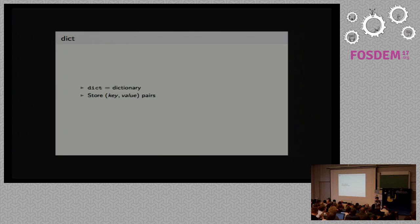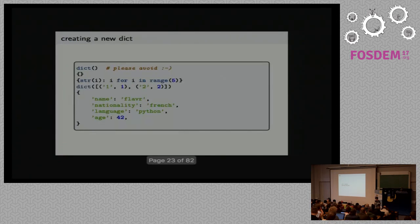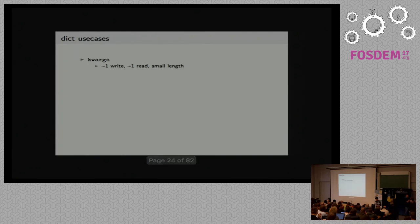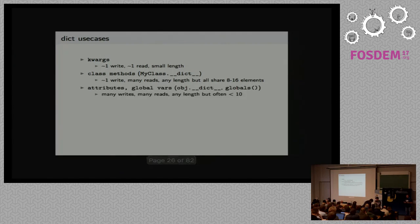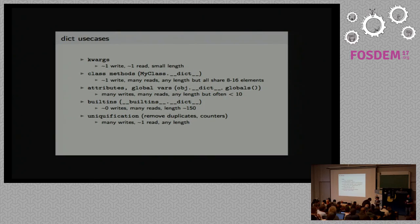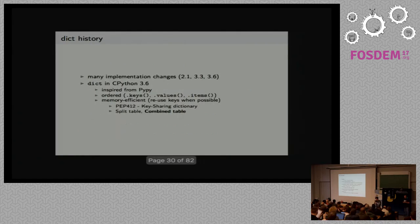So that's it for lists. Now let's move on to dictionaries. Dictionaries are meant to store key-value pairs. The use cases of dictionaries are quite a lot. The first one is keyword arguments — when you pass keyword arguments to a function or method, each key gets written about once and read about once. Next are class methods, which are also stored in dictionaries. Then attributes and global variables, built-ins, uniquification — removing duplicates from a list or counting things — and any other use where you want to write keys to read them, with sometimes deletions too.